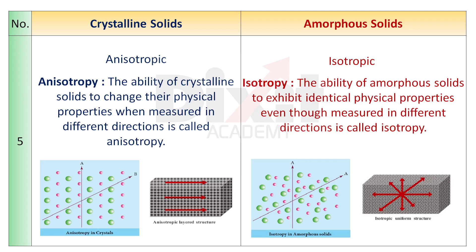Point number 5. Crystalline solids are anisotropic. Anisotropy is the ability of crystalline solids to change their physical properties when measured in different directions. Amorphous solids are isotropic. Isotropy is the ability of amorphous solids to exhibit identical physical properties even though measured in different directions.